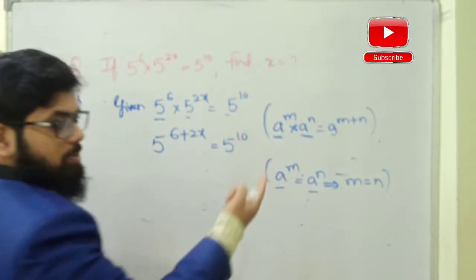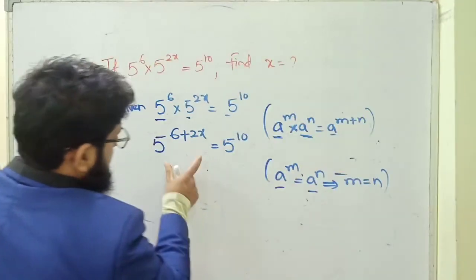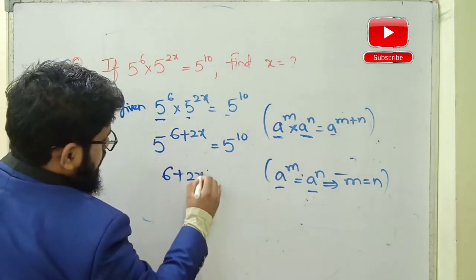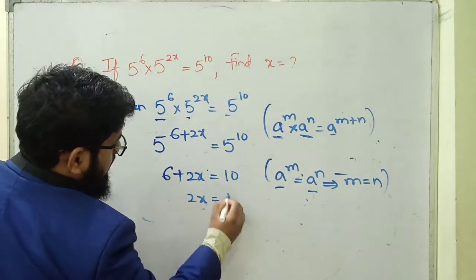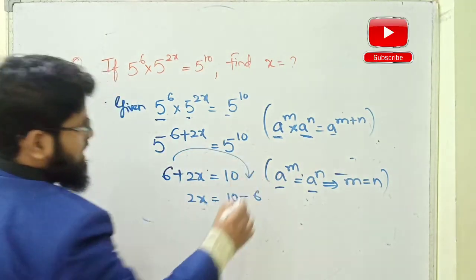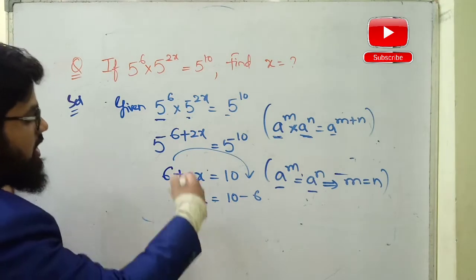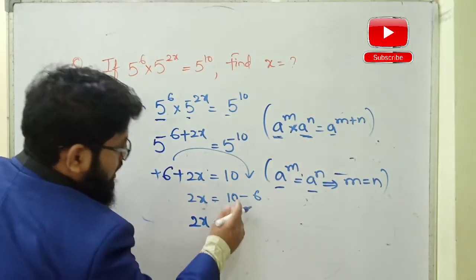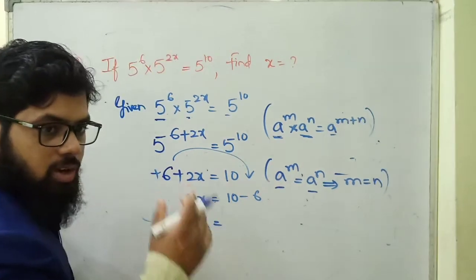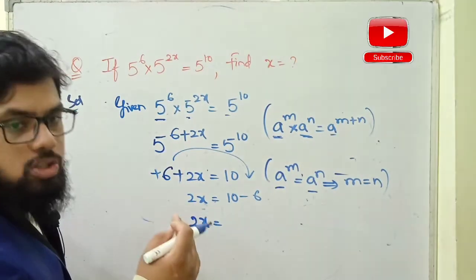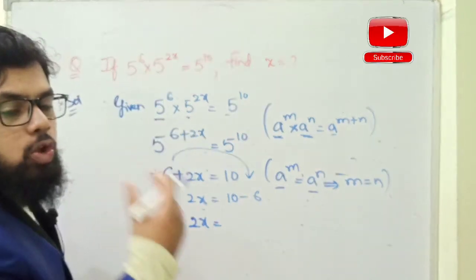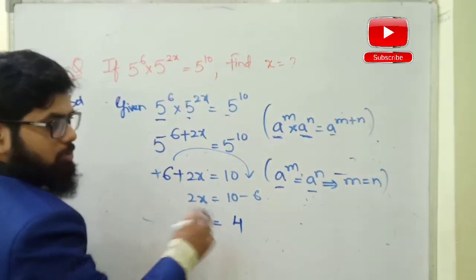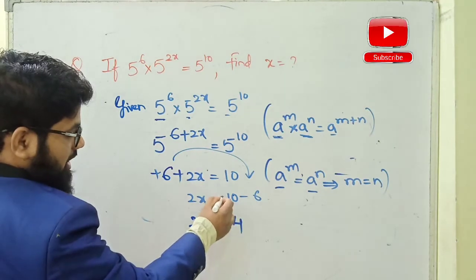Based on this formula, since 5^(6+2x) equals 5^10, and bases are same, we equate the powers: 6 + 2x = 10. Now transposing 6 to the RHS — plus 6 becomes minus 6 — so 2x = 10 − 6. Different signs: bigger number sign is with 10, so 10 minus 6 equals positive 4. Therefore 2x = 4.